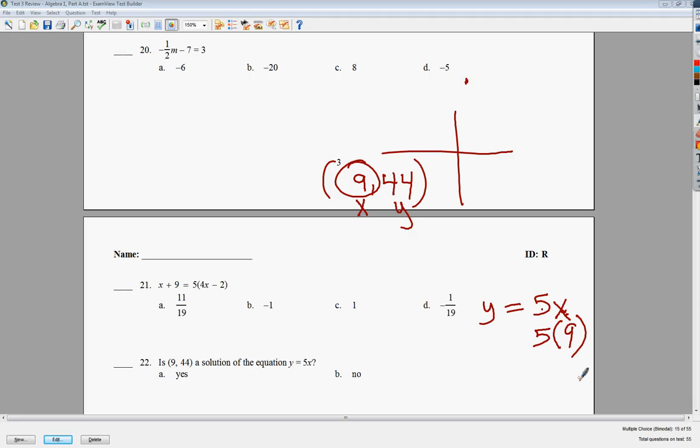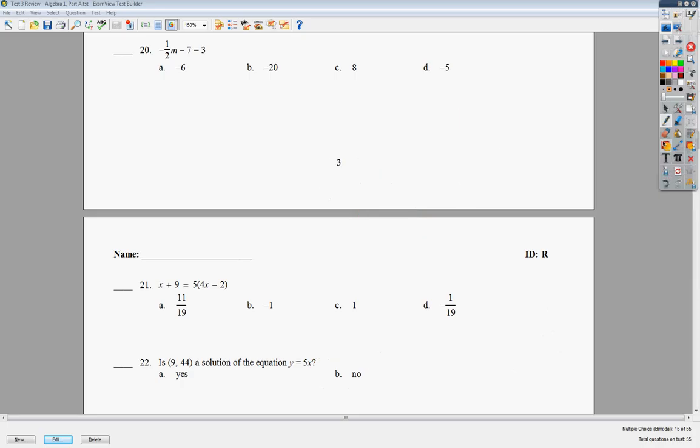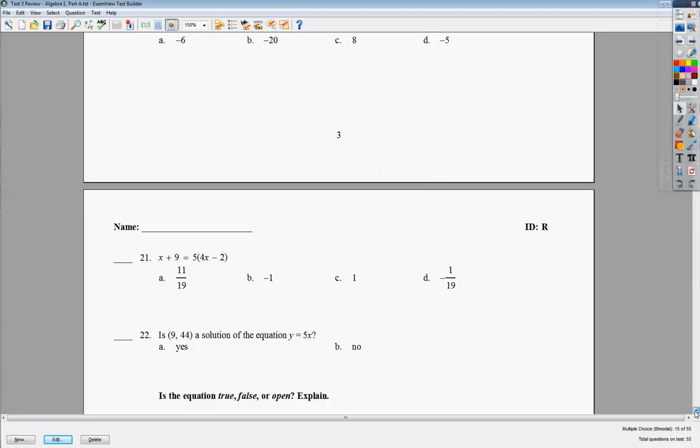And my y value is 44. Now, 5 times 9 is 45. They want to know if that's the truth or not. Is 44 the same as 45? And obviously it's not. So my answer is B. No, it's not a solution. If it had been the same answer, then yes, it would have been a solution. They're looking for plugging in one, getting the other, that kind of thing.